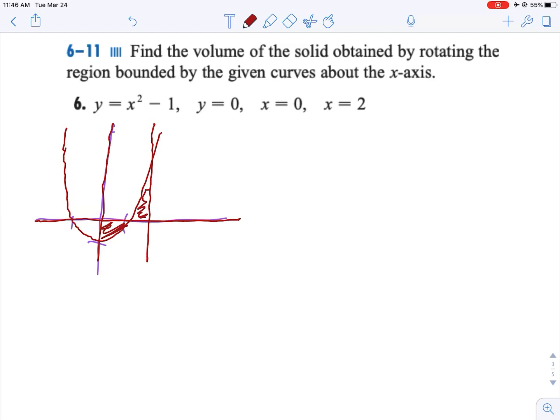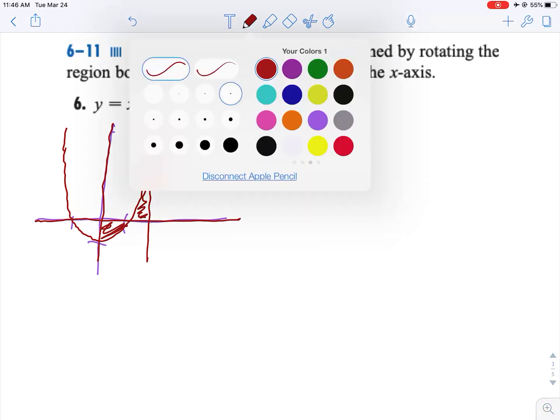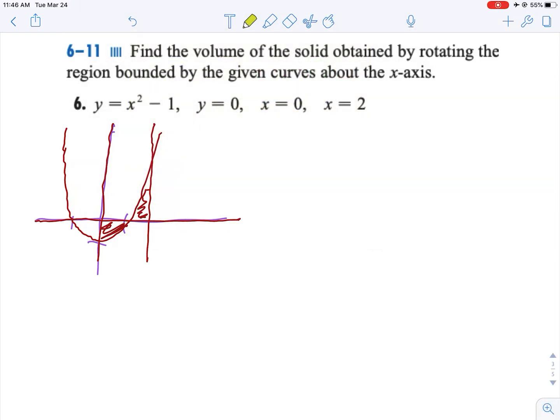Now what's really great about that is we don't have to separate them because if you think about this one here will become a positive volume region when it's spun around the x-axis. This one here will become a region when it's spun around the x-axis. So the formula itself will take care of any positives or negatives.